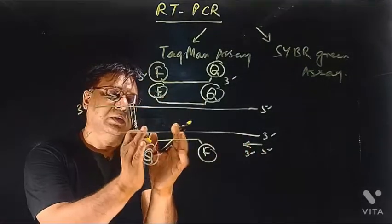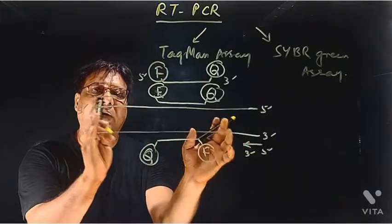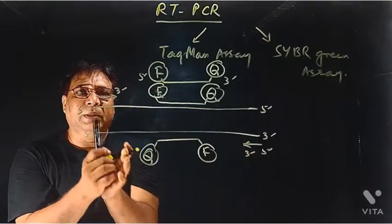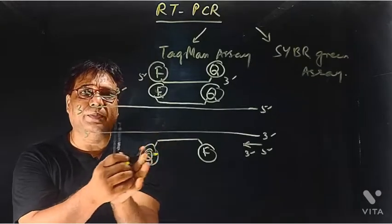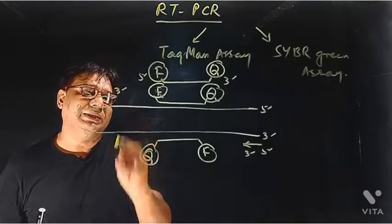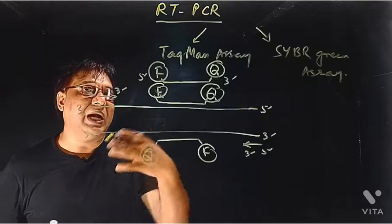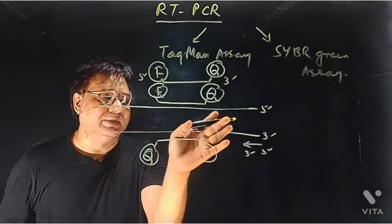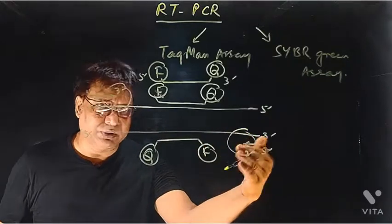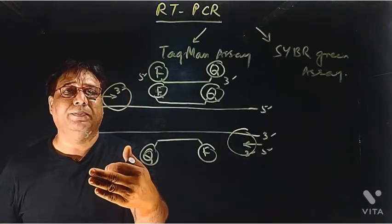This probe binds within this pair of primers, in the path of the DNA polymerase, Taq DNA polymerase. When the Taq DNA polymerase starts synthesis, it will bind here and proceed in this direction, 5' to 3' direction.